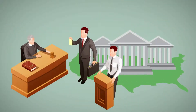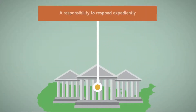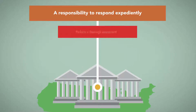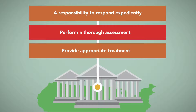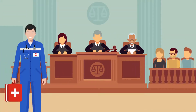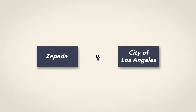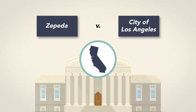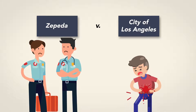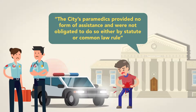Courts and state legislatures have also considered whether EMS workers have a duty to act. Courts generally interpret this duty as a responsibility to respond expediently, perform a thorough assessment, provide appropriate treatment, and transport the patient if necessary. However, some courts have ruled that EMTs have no greater duty than ordinary citizens. For instance, in Zepeda v. City of Los Angeles, the Court of Appeals of California reviewed the actions of a paramedic team that refused to treat a gunshot victim until the police arrived on the scene. Finding in favor of the city, the court stated that the city's paramedics provided no form of assistance and were not obligated to do so either by statute or common law rule.